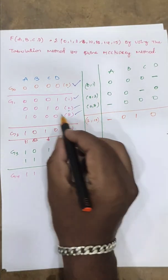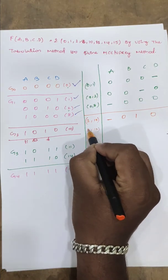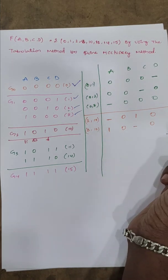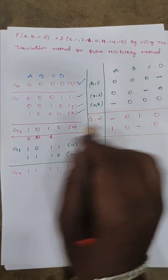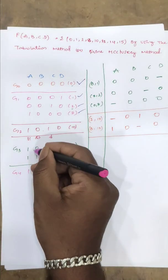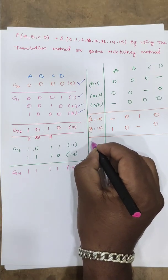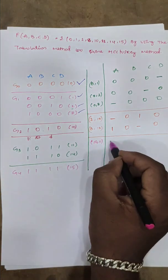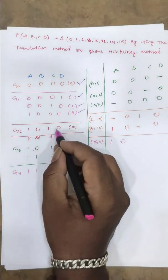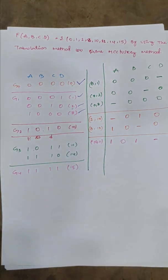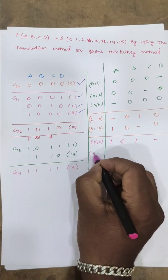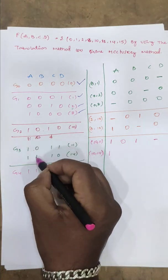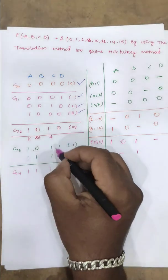Comparing 10 and 11: 1,1 same; 0,0 same; 1,1 same; and 0,1 different — so underscore on D. Next, comparing 10 and 14: 1,1 same; 0,1 different — underscore on B; remaining bits are same. We add ticks to both 10 and 14.